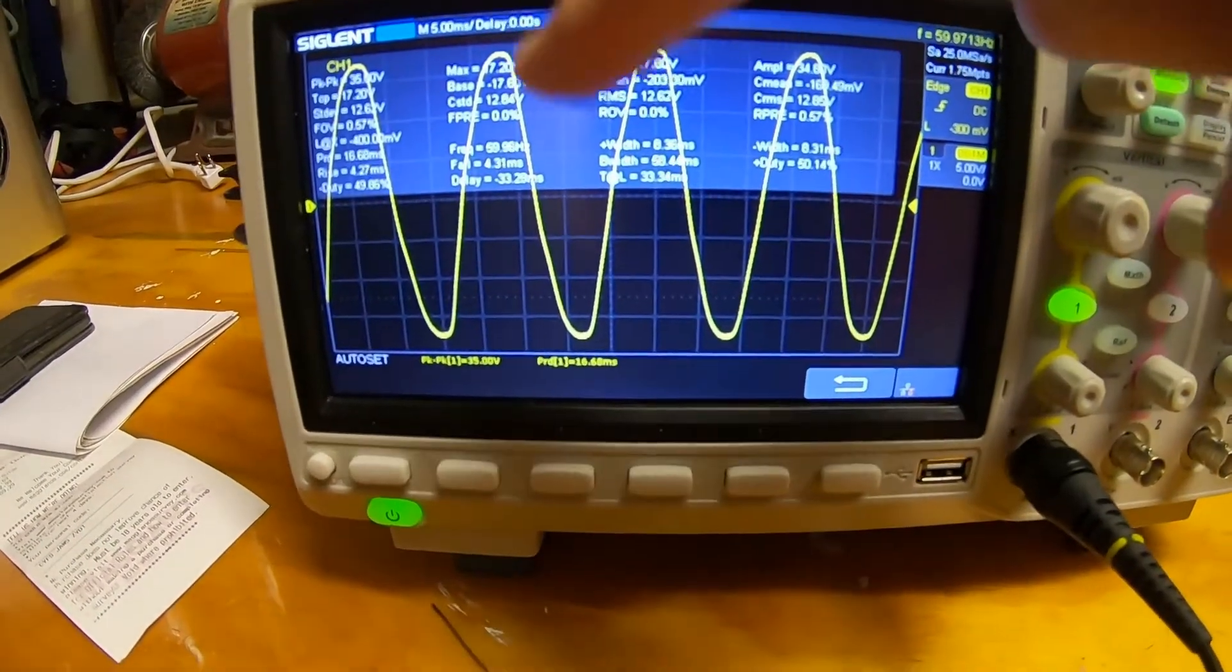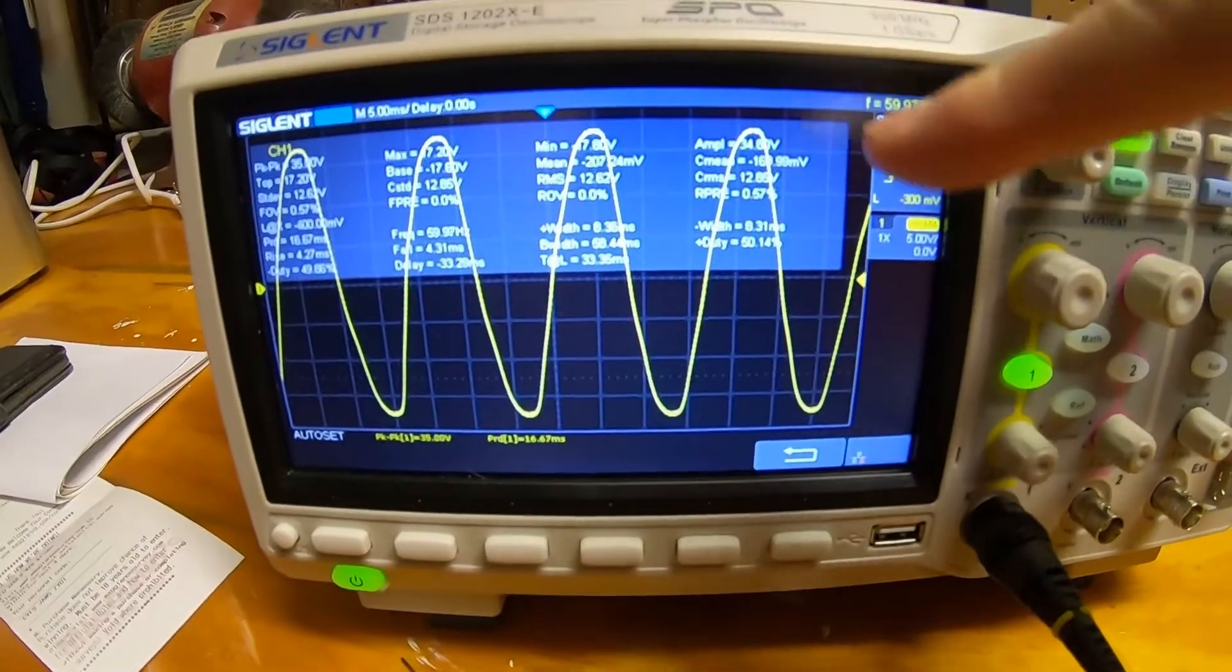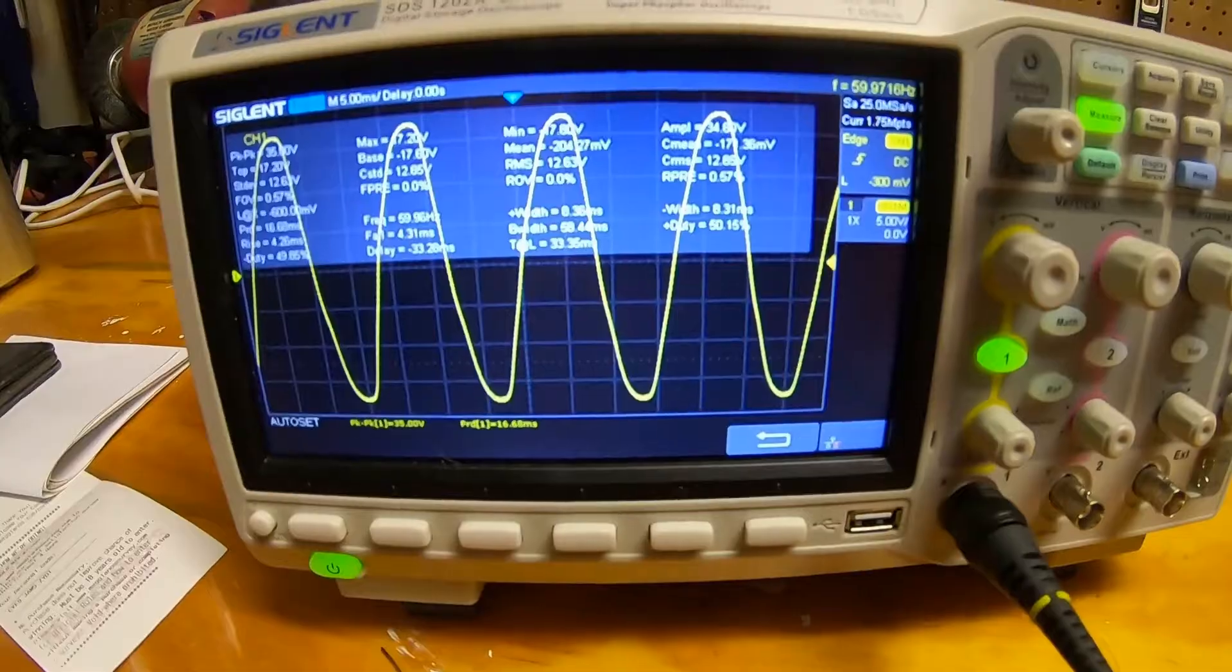That's what sine wave power looks like out of your outlet. Notice that the waveform is nice and smooth. The power is always or the voltage is always changing. There's no flat spots.